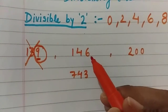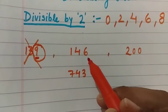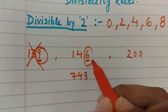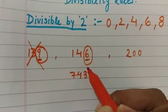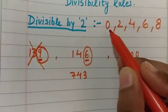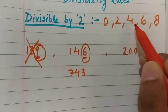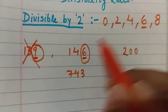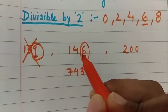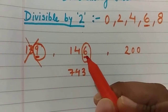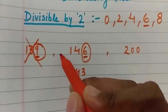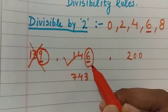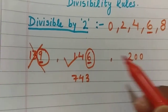Next is 146. What is the ones place digit? It is 6. Since 6 is in the list 0, 2, 4, 6, or 8, the number 146 is divisible by 2.